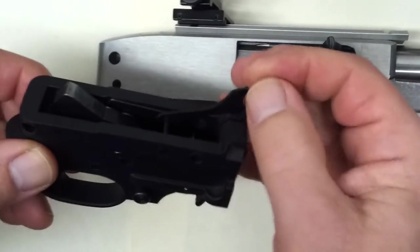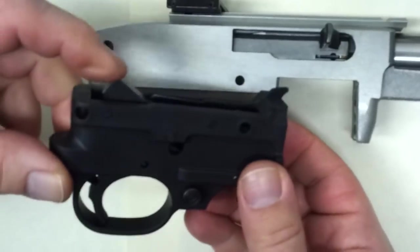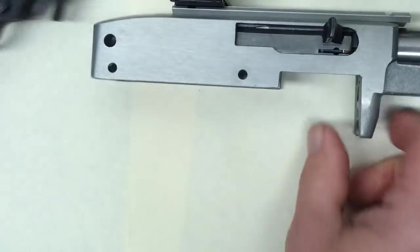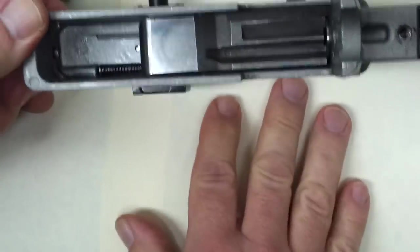Notice that the ejector sometimes comes out of its slot, but you can put it back in easily. The hammer was cocked back so that it doesn't push against the bolt while we're taking things apart.